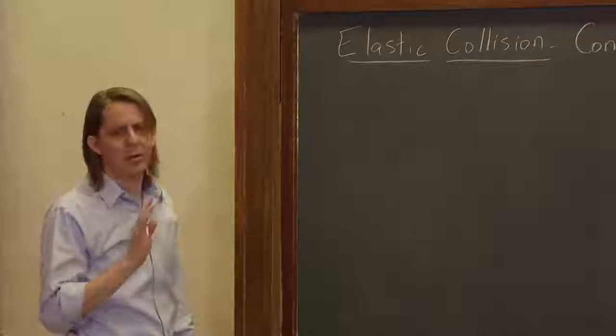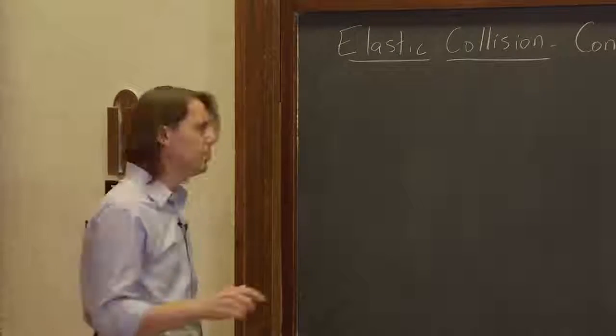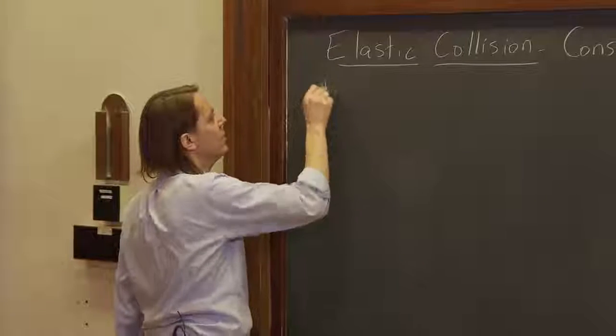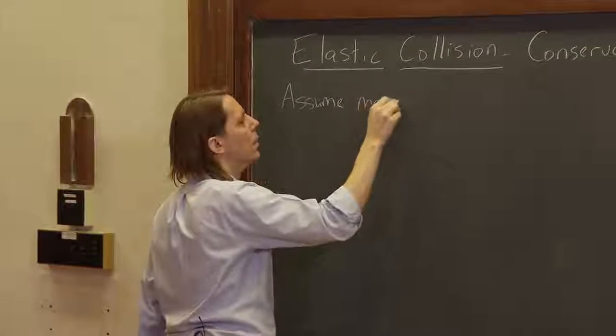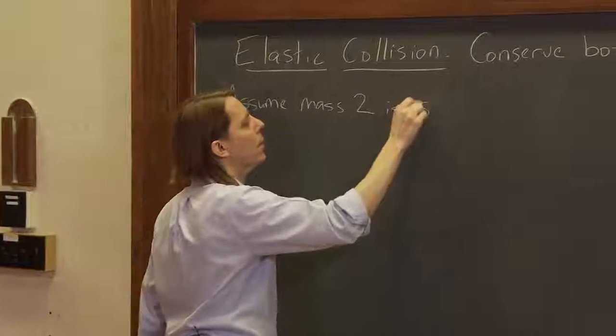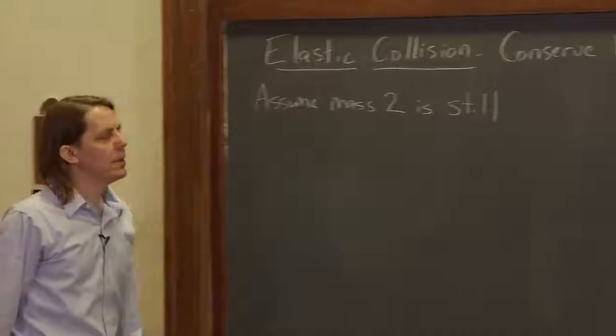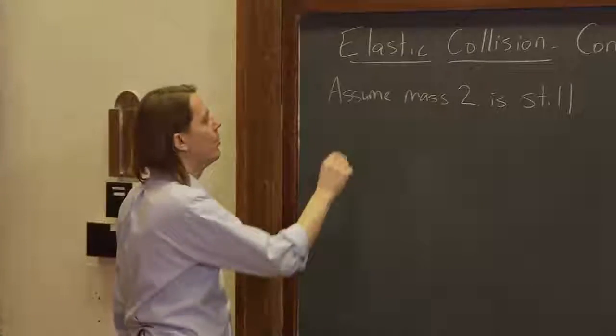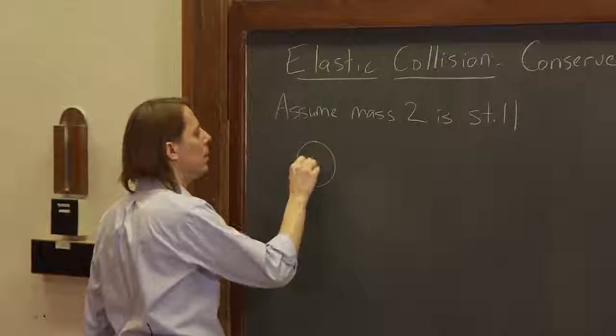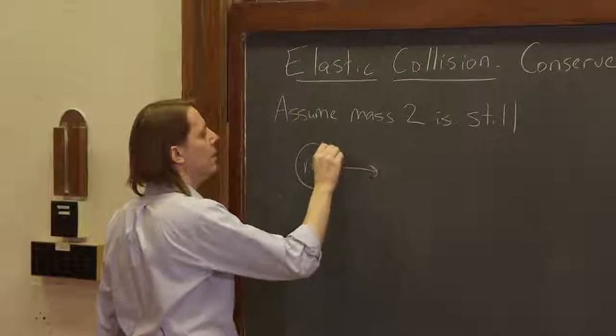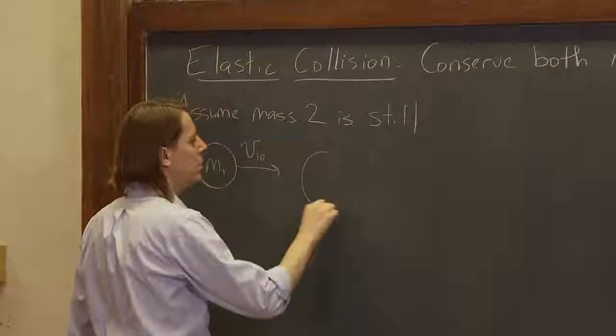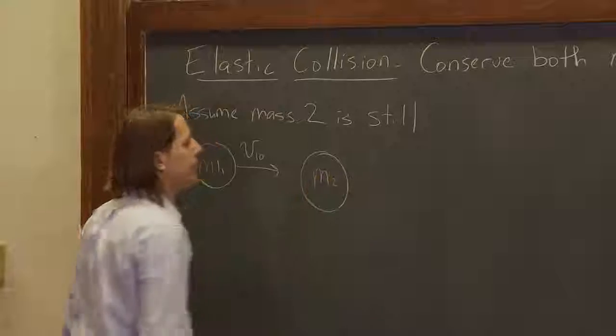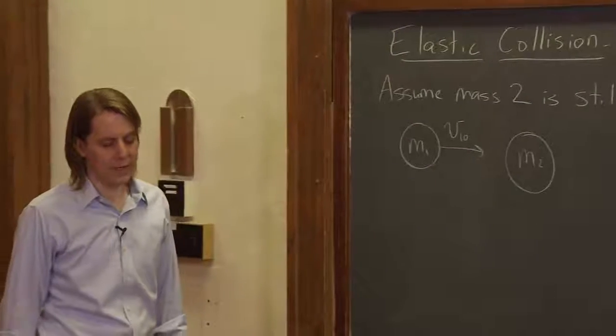Let's see, the only way I want to try to do this is let's assume mass two is still. So we're really just going to do the elastic collision where mass one comes in at V1 naught and mass two is just sitting there doing nothing, just waiting to be struck.